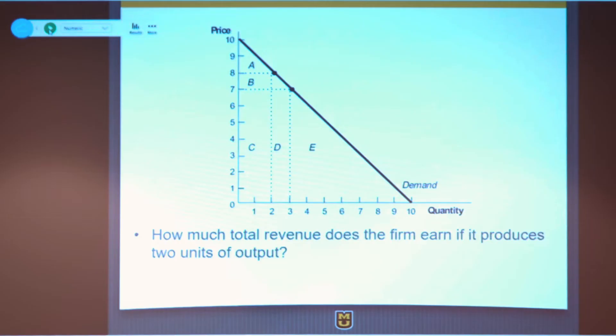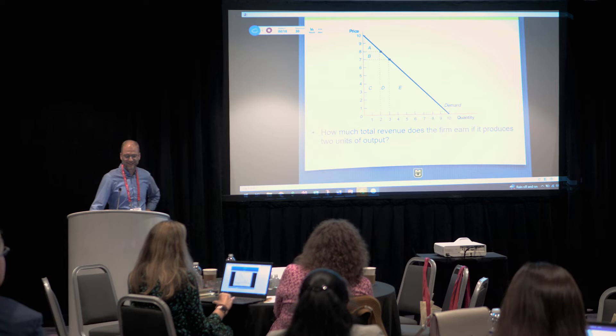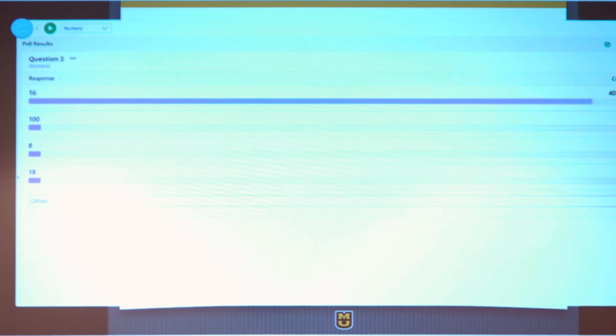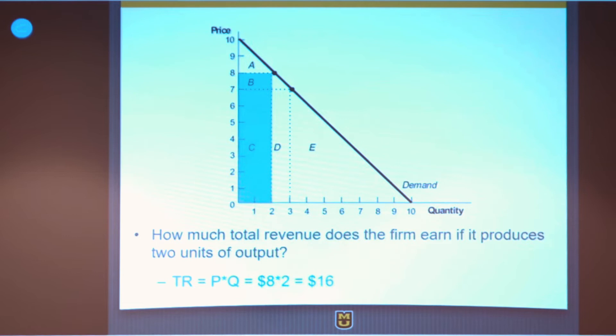If we have two units of output with this demand curve, what is our total revenue? We'll cut this one in the interest of time. The nice thing is you can sort by most common answer — the most common answer was 16, which is of course the correct answer. Then I pop up the slide, graphically show what it is, and we can get the calculation. The second question I'll skip in the interest of time.